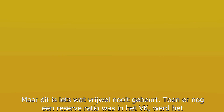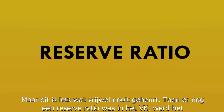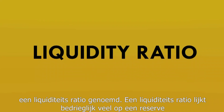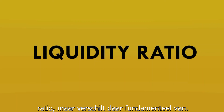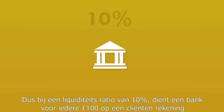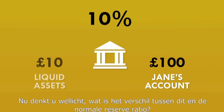When there was a reserve ratio in the UK, it was what was called a liquidity ratio. A liquidity ratio is deceptively similar to a reserve ratio, but fundamentally different. A liquidity ratio requires banks to hold liquid assets equal to a percentage of their deposits. So if a liquidity ratio was set at 10%, a bank with £100 in a customer's account would need to hold £10 of liquid assets.